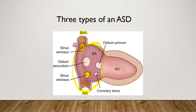The secundum defect is here in the center of the atrial septum — the most common ASD. The ostium primum is near the AV valves. The coronary sinus ASD would be in this area, but it's rare to see on echo. What you're really looking for is a dilated coronary sinus, though other things such as anomalous pulmonary venous return to the coronary sinus can also cause that, so it may need to be confirmed in the cath lab.